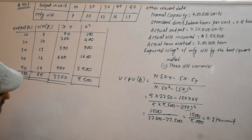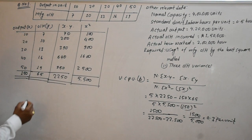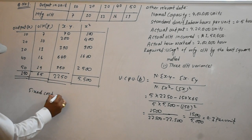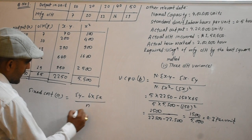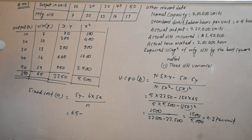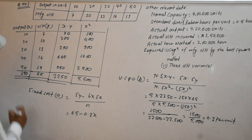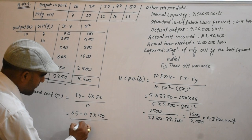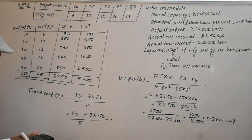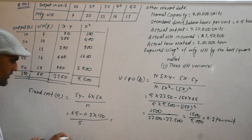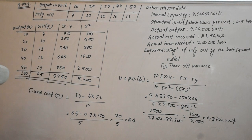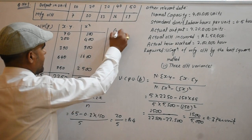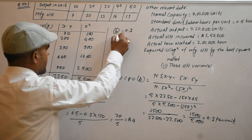The fixed cost is a. The formula is: a equals the sum of y minus b times the sum of x, all divided by n. So a equals 65 minus 0.3 times 150, divided by 5, which gives a fixed cost of 4.